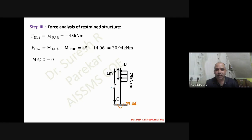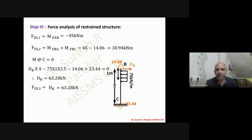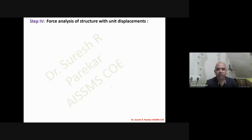For FDL3 (reaction at B), we take moments about C = 0. The moments are minus 14.06 and 23.44; reaction is rightward. With HB·4 clockwise and the load moment terms: minus 14.06 + 23.44, plus HB × 4, accounting for the 75 kN load at 3.5 m, gives FDL3 = HB = 63.28 kN.